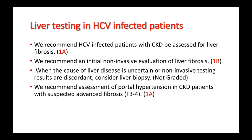A strong recommendation states that patients should be assessed for portal hypertension when suspected to have advanced fibrosis, meaning F3 to F4 on fibroscan. It has been shown that portal hypertension is unlikely when elastography reveals values less than 20 kilopascals and platelets are greater than 150,000. When these values are met, you can avoid performing upper GI endoscopy to look for esophageal varices.